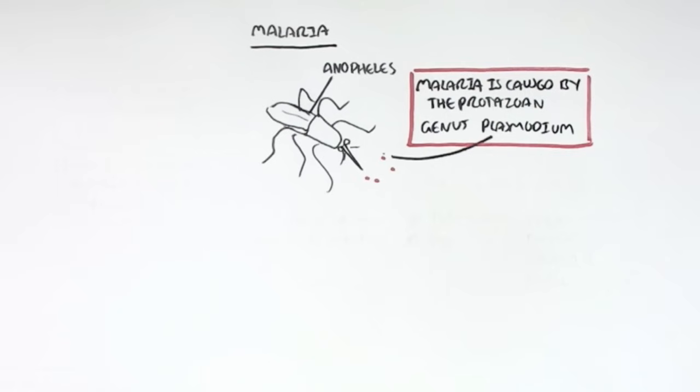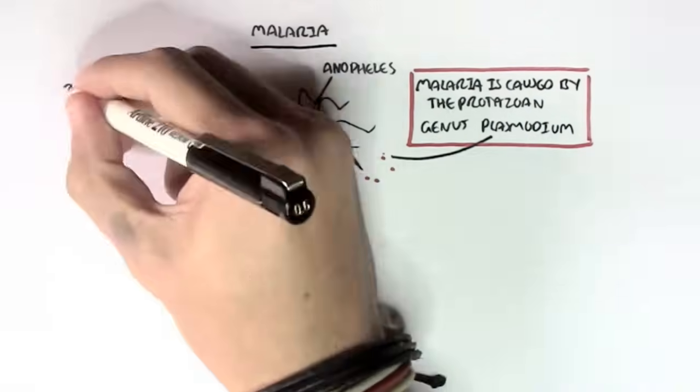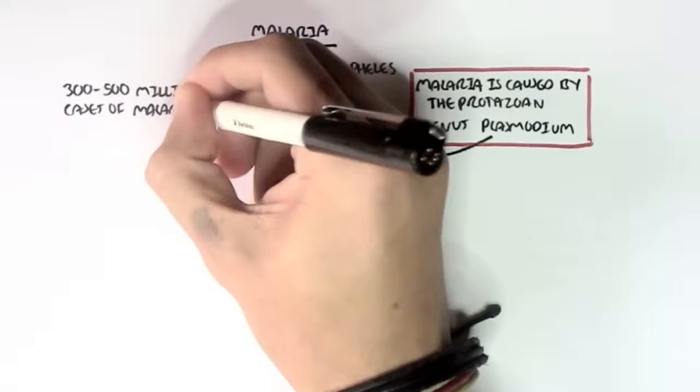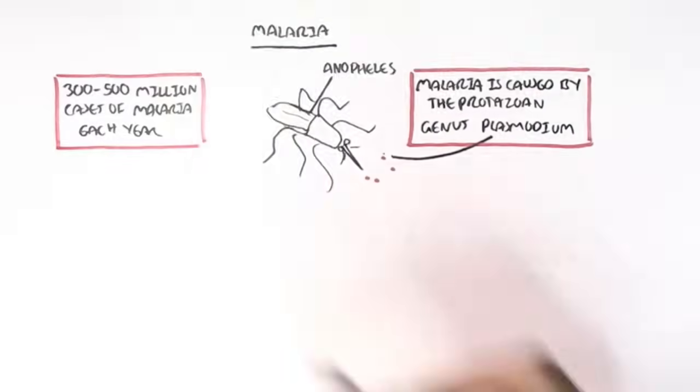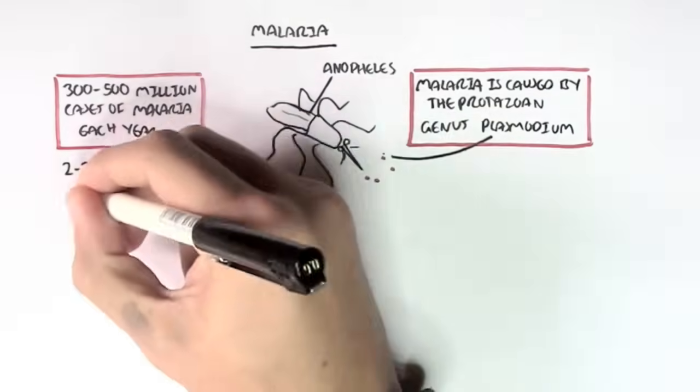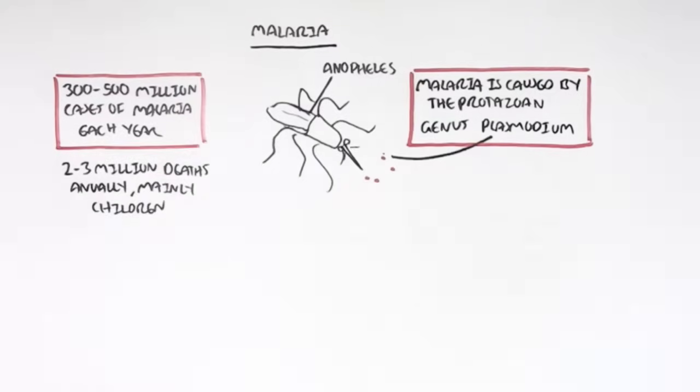Malaria is a problem, especially in developing and tropical countries. There are 300 to 500 million cases of malaria each year and 2 to 3 million deaths annually. And this occurs mainly in children.